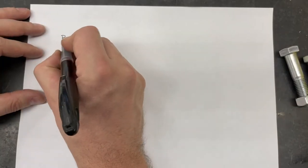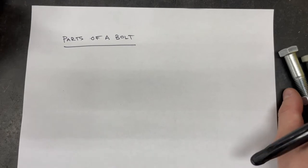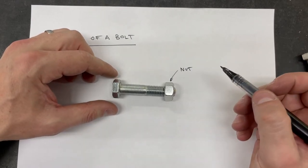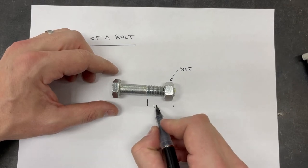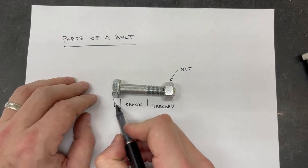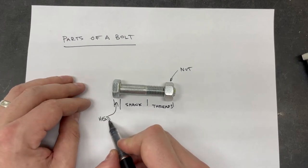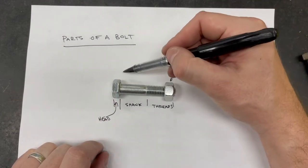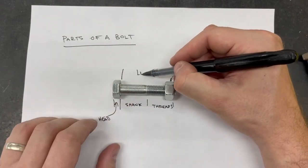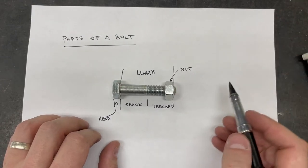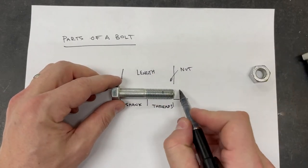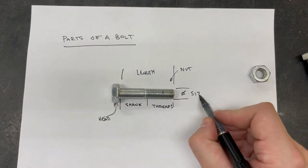On a bolt, the nut screws off. The threaded section is called the threads. The section from the threads up to the shoulder is called the shank, and the end piece is called the head. The overall length of the fastener is measured from the head all the way to the end of the bolt. The diameter — the actual size — is measured across the threaded portion.